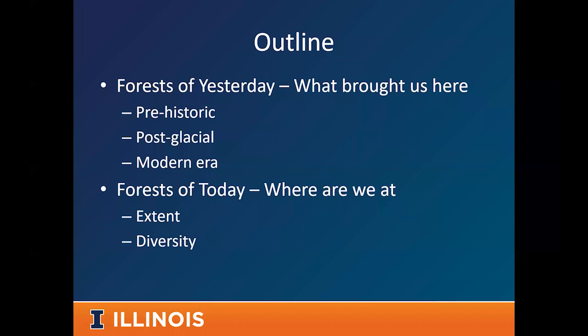What phenomenon, what influences happened that made our forest, and what were the changes in the forest over time? We're going to talk about the forest of yesterday, what brought us to where we're at today. I broke it into three different major periods: prehistoric influences, post-glacial influences, and what's happened in the modern era to impact our forest. Then I'll end with a talk about the forest of today — where are we at, what's the diversity, the extent, where is our forest at this point?